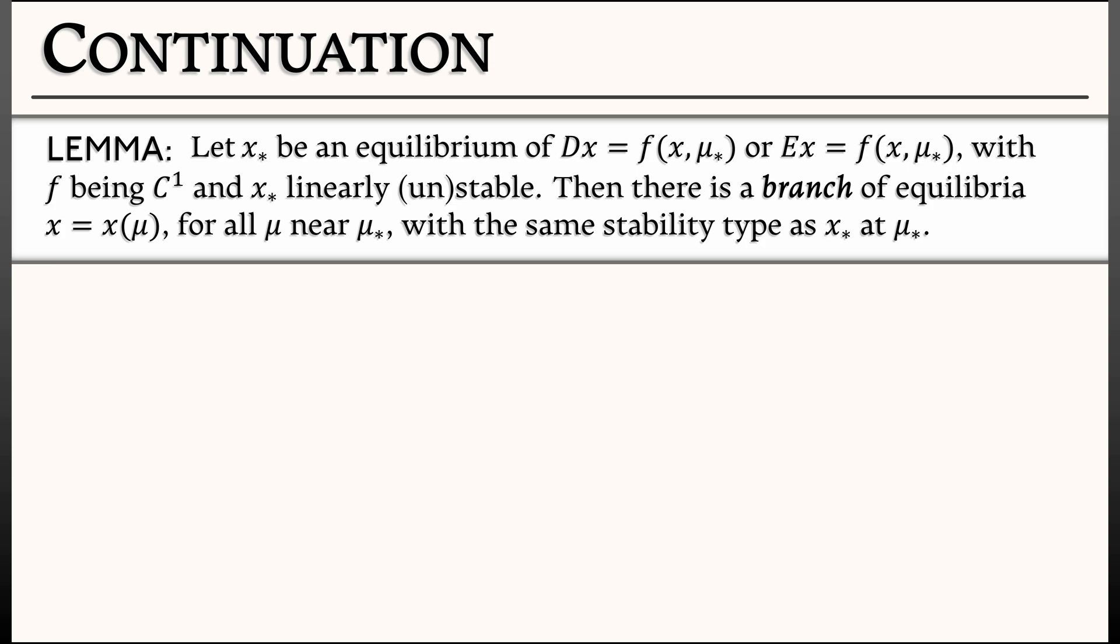That means if you have a stable equilibrium, you turn the dial a little bit, it remains a stable equilibrium. If you have an unstable equilibrium, you turn the dial a little bit, it remains an unstable equilibrium, even though the position or location of those equilibria may change slightly. That's what the continuation lemma says.